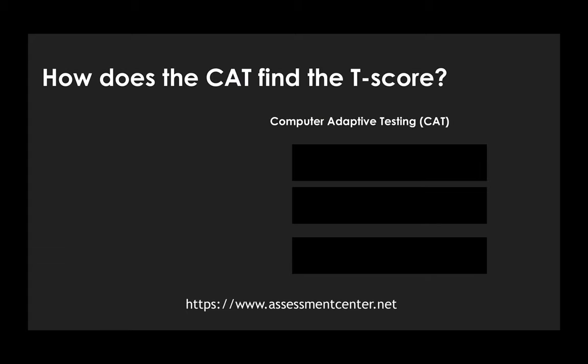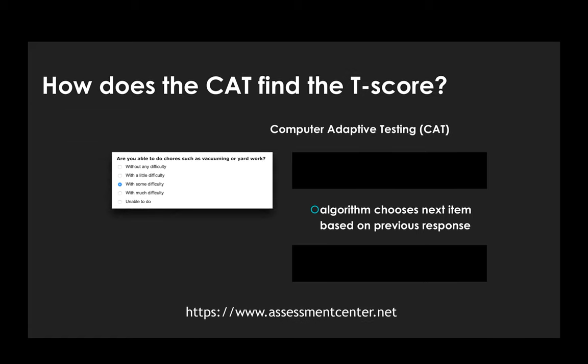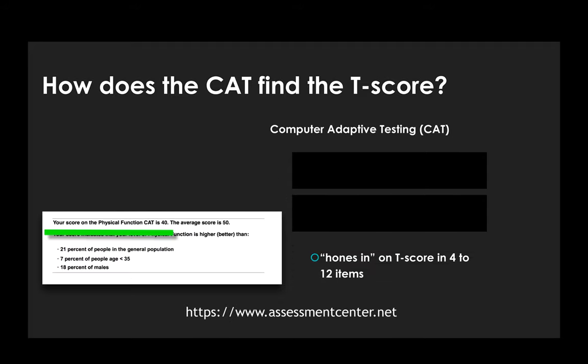So how does the CAT find the T-score? It starts with a score near the middle of all of the items. In this case, the person answers that the task is difficult. So the algorithm chooses a task that's physically less demanding than two hours of physical labor. We can see here that the item chosen is vacuuming and yard work. And the iterations continue until the algorithm determines the person's T-score.